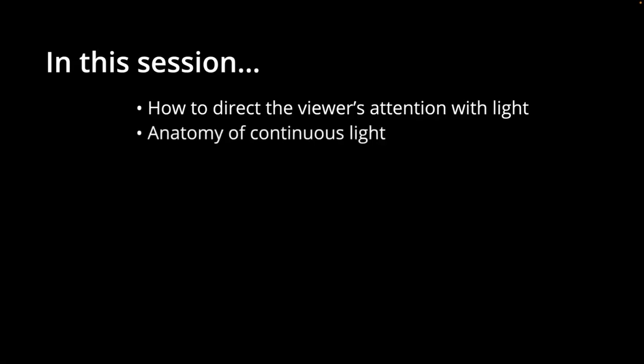We're going to talk about how to recognize light so that you can direct the viewer's attention, and we're going to talk about the anatomy of continuous light — what makes it up and its parts and pieces so that you can recognize it and work with it. We're going to talk about practicals, which are an important part of continuous light. We see them all the time, particularly in cinema — lights in interiors like a lamp, a sconce, or under-counter lights. Those are the lights that are always on, and they add a lot of ambience to our shots.